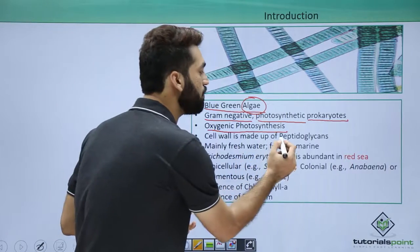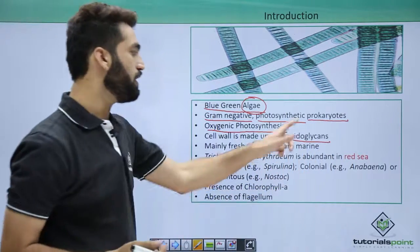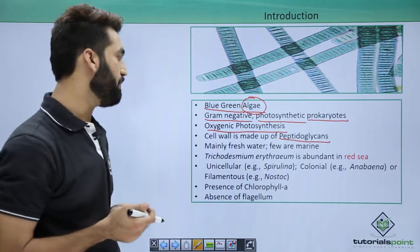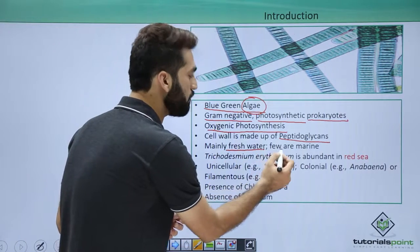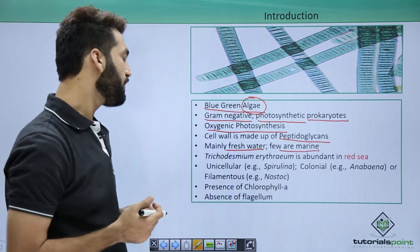The cell wall of cyanobacteria, being prokaryotes and members of monera, is naturally made up of peptidoglycans. They are basically freshwater organisms, but can also be found in marine water.